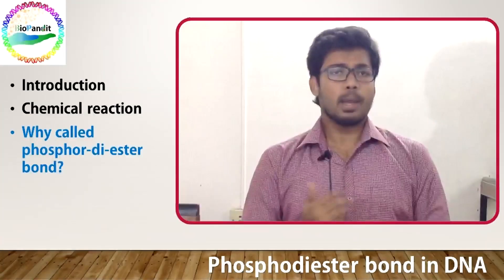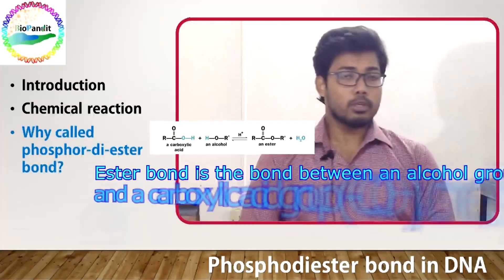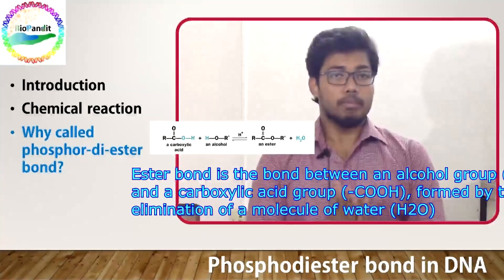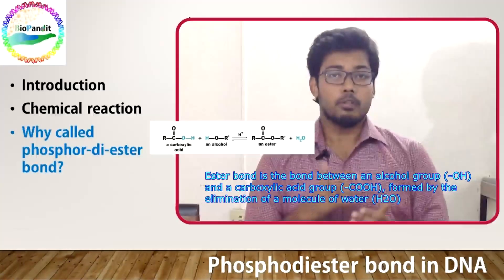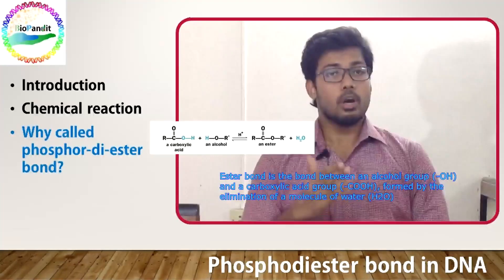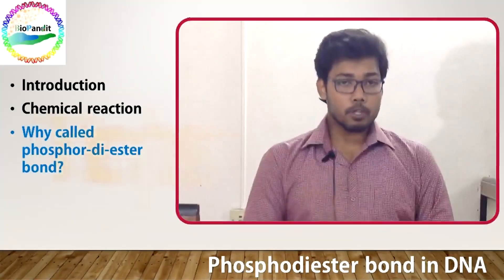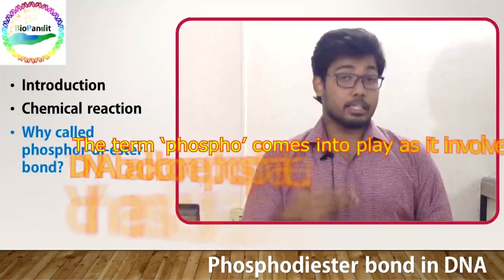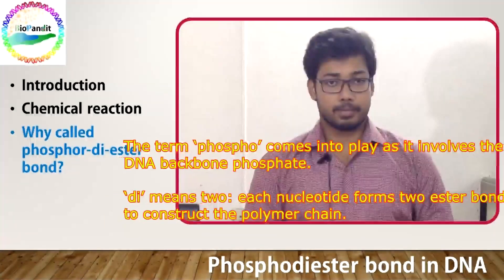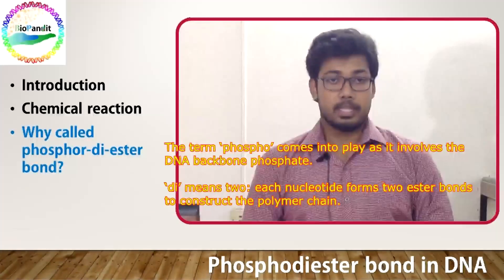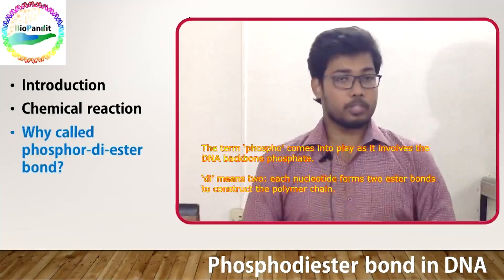Why is this called the phosphodiester bond? An ester bond is the bond between an alcohol group and a carboxylic acid group formed by the elimination of a molecule of water. The term 'phospho' comes into play as it involves the hydroxyl group of the DNA backbone phosphate. And the term 'di' means 2 — each nucleotide forms 2 ester bonds to construct the polymer chain.